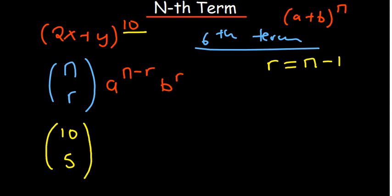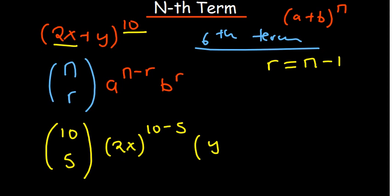Because we start counting from 0, r = 5. Our a in this case is 2x, so we have (2x) to the power n minus r, which is 10 minus 5. And then b is y, raised to the power 5.